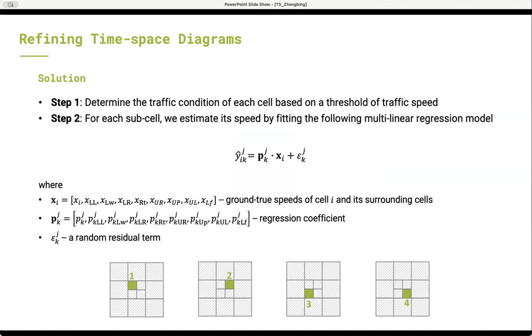To solve the problem, we propose a two-step method. Given a time-space diagram, step 1: we determine the traffic condition of each cell according to a threshold of traffic speed. Step 2: for each sub-cell, we estimate its speed by fitting the following multi-linear regression model.